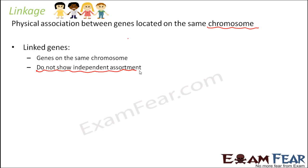When I say independent assortment, that refers to Mendel's principle of independent assortment. In Mendel's dihybrid cross, he considered two traits: the shape of the seed and the color of the seed. He said that the gametes — capital R and small r — segregate independently of how capital Y and small y segregate, because the shape and color of the seed are independent of each other. So those two genes are basically independent of each other.